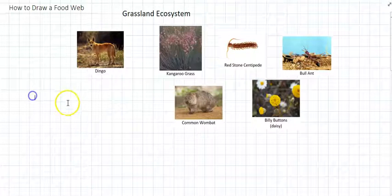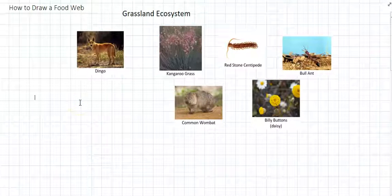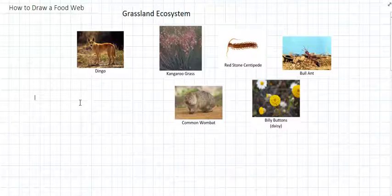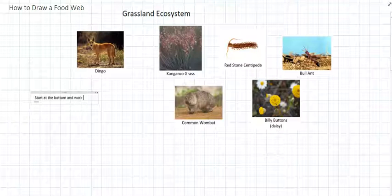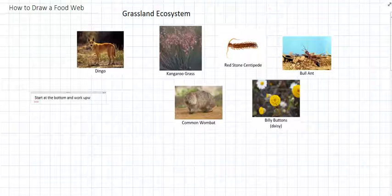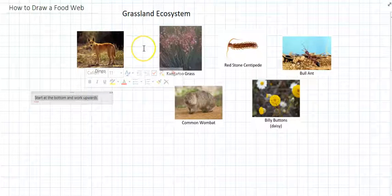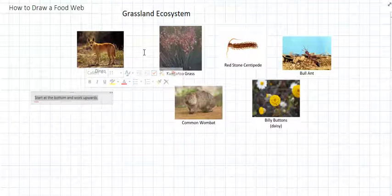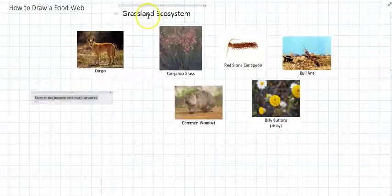So the big idea for making a food web is to start at the bottom and work upwards. Because it's much easier to start with the producers at the bottom and then work step by step to figure out what eats what.